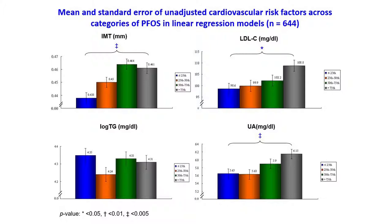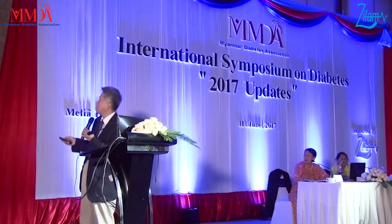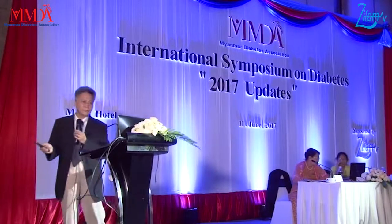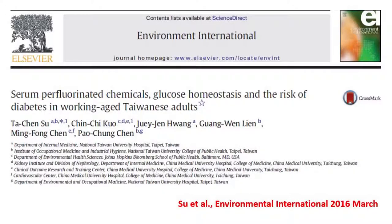We found that PFMA is associated with IMT, associated with LDL levels, and associated with uric acid — all after controlling for multiple covariates. We also found that PFMA increases with CMT, while PFMA is negatively associated with CMT.